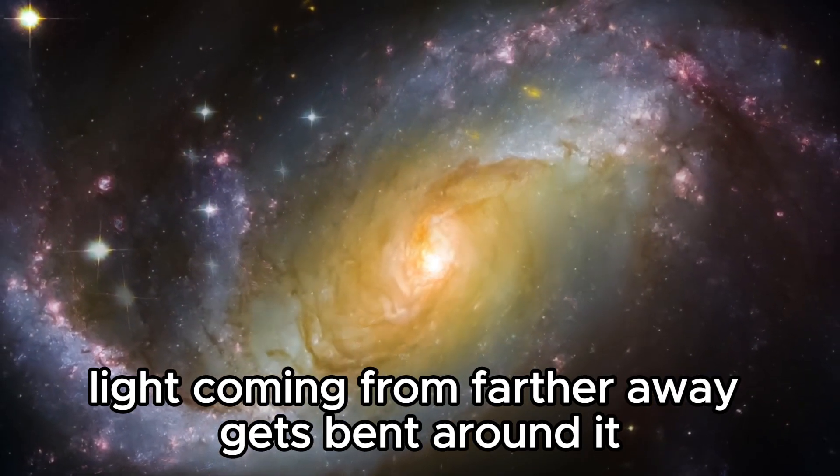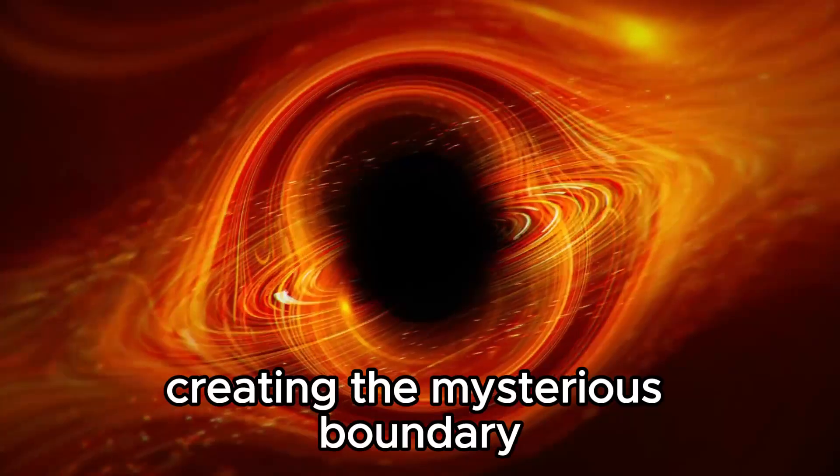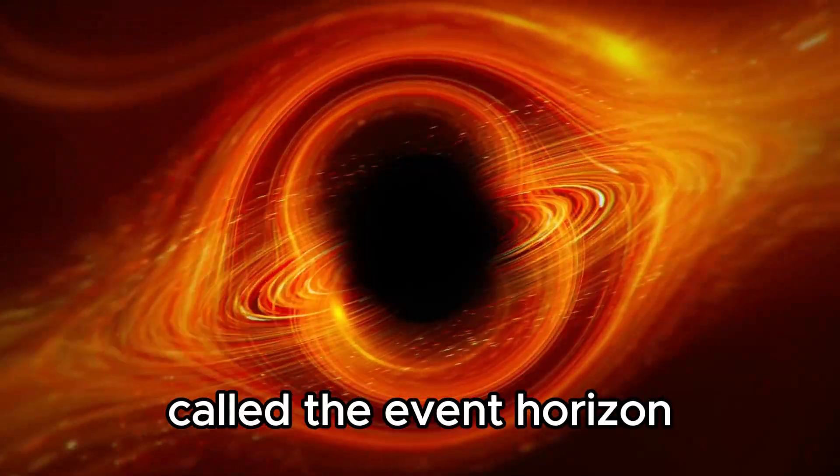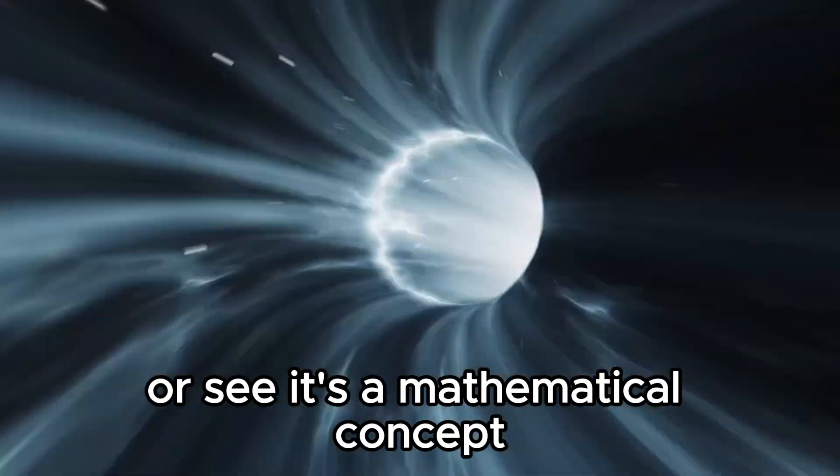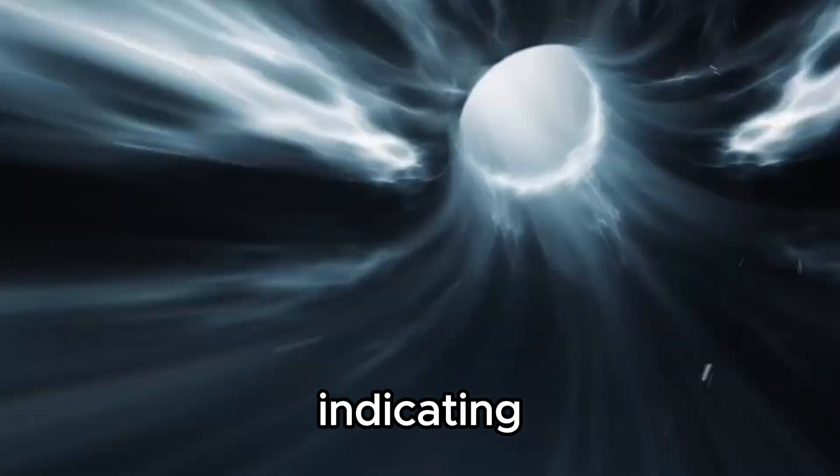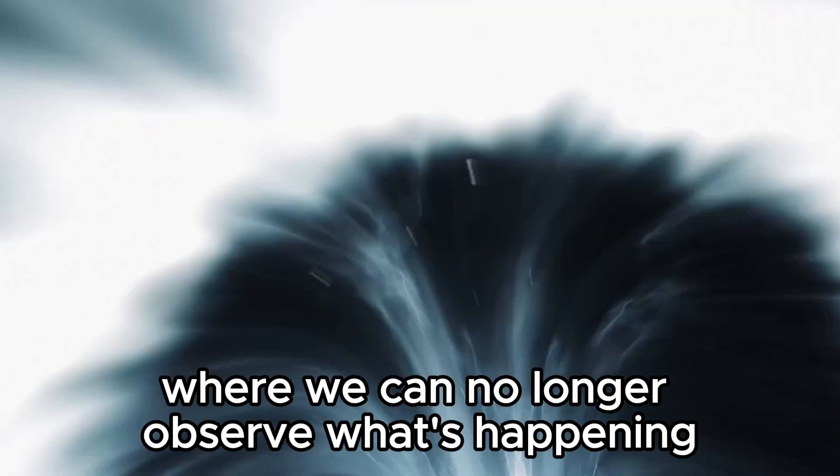Light coming from farther away gets bent around it, creating the mysterious boundary called the event horizon. This boundary is not something you can physically touch or see. It's a mathematical concept indicating where we can no longer observe what's happening.